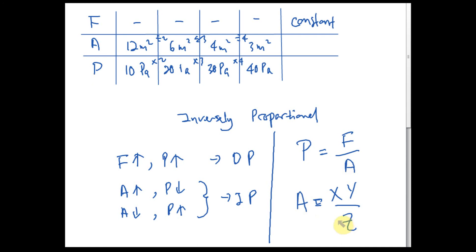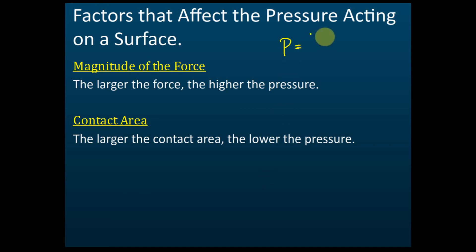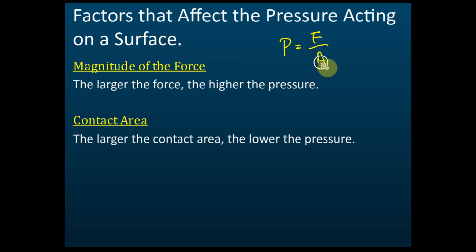So let's go back to the factors affecting pressure. From the formula P = F/A, pressure is directly proportional to F — so the larger the force, the higher the pressure. And pressure is inversely proportional to the contact area — so the larger the contact area, the lower the pressure. These are the factors that affect the pressure acting on the surface.